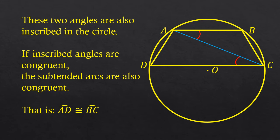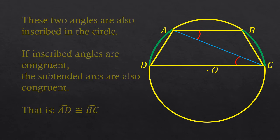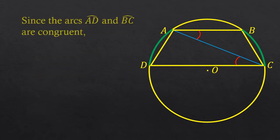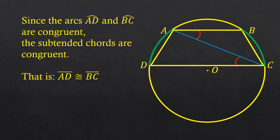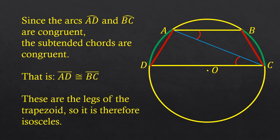That means their angular measure is the same — shown there in green. Since these arcs are congruent, the subtended chords are also congruent. That is, line segment AD and line segment BC are congruent to one another, shown there in red. Note that these are also the legs of the trapezoid, and therefore the trapezoid itself must be an isosceles trapezoid.